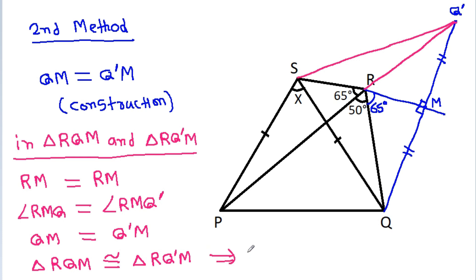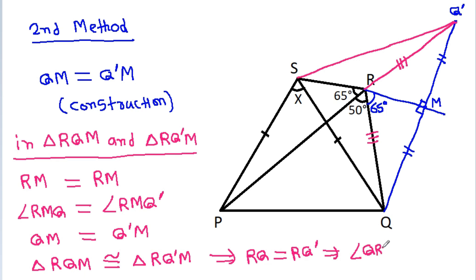In triangle RQM and triangle RQ'M, RM is common, angle RMQ equals angle RMQ', and QM equals Q'M. So triangle RQM is congruent to triangle RQ'M. Therefore RQ equals RQ' and angle QRM equals angle Q'RM. So this angle will be 65 degrees.